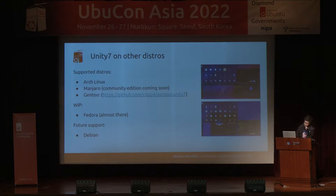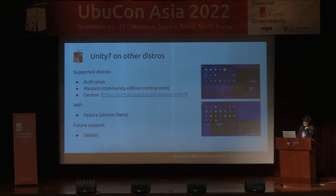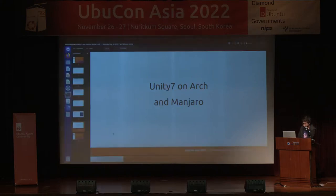After the Fedora port, I'm thankful to the community — including catmaster21 — for their help. After those ports, I'll probably be working on a Debian port, since it will be pretty similar to the Ubuntu packages. I've included two screenshots: the first is Unity on Arch, which I'm running now, and the second is Unity on Manjaro. I'll quickly show Unity running on our image.